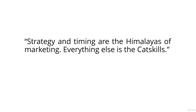Al Rees says strategy and timing are the Himalayas of marketing — everything else is the cat skills. At this point, it's pretty clear social media needs to start playing a role in your overall marketing strategy, and you need to create a good social media strategy if you want to get great results.